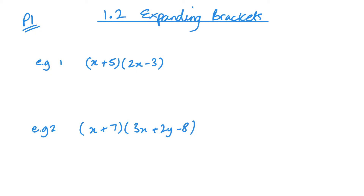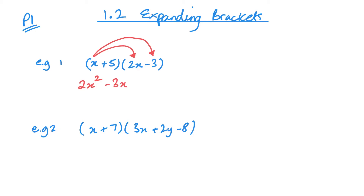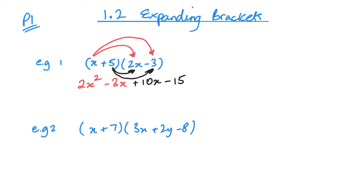The easiest way is to start with the first term: x multiplied by 2x gives 2x squared. Then take that first term and multiply by the second term in the second bracket: minus 3x. Next, take the second term in the first bracket and multiply by the first term: 5 times 2x is 10x. Then 5 times minus 3 is minus 15. Simplifying: 2x squared, then minus 3x plus 10x gives plus 7x, and minus 15.